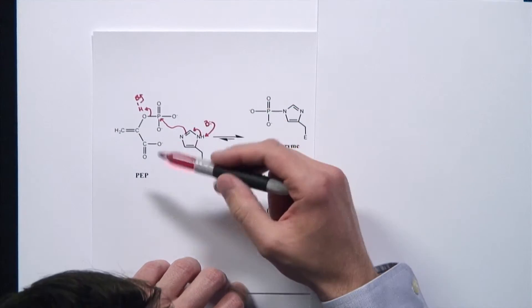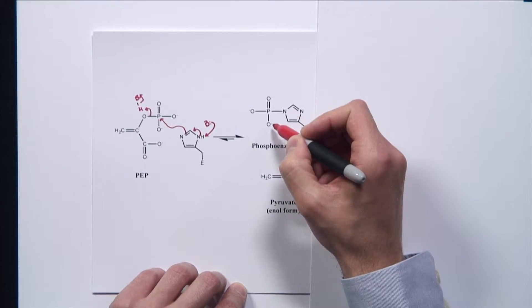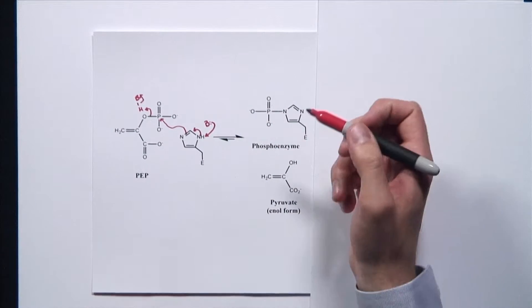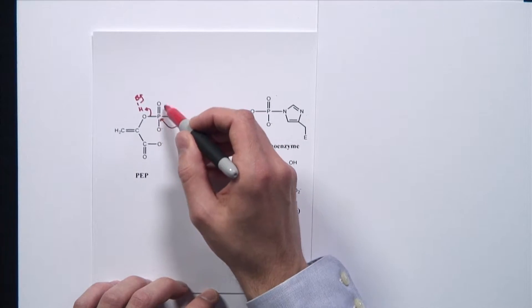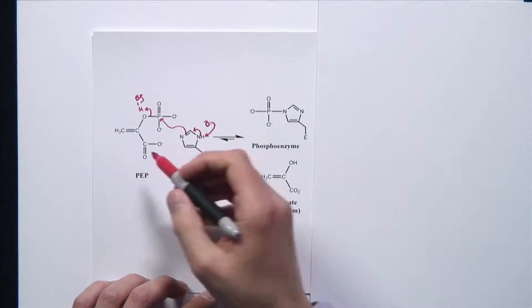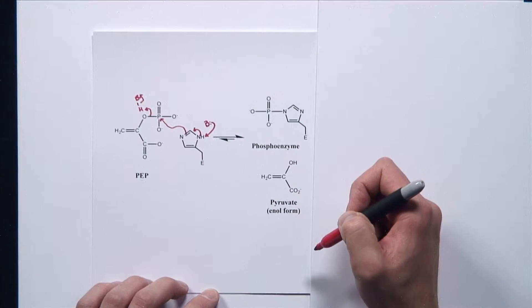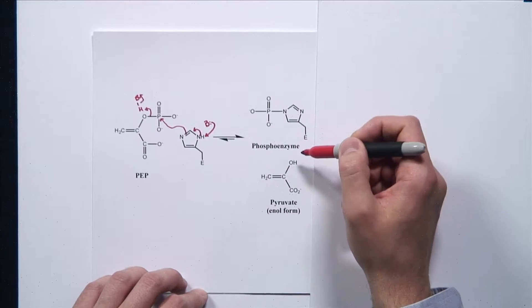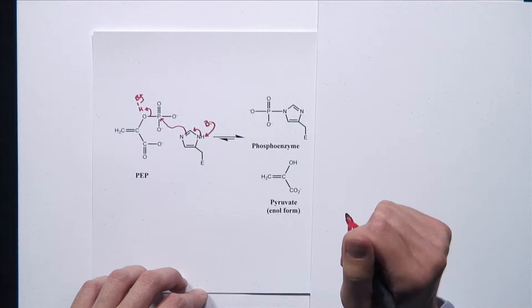If we evaluate the starting material and the product in terms of their ability to stabilize negative charge — such as the charges on the phosphate — by resonance, we notice there's no significant difference. We have two negative charges and one phosphorous-oxygen bond where charge can delocalize, as well as a carboxylate group present in both. So there's not a lot of resonance stabilization between starting materials and products, and therefore this reaction is thermodynamically close to neutral.